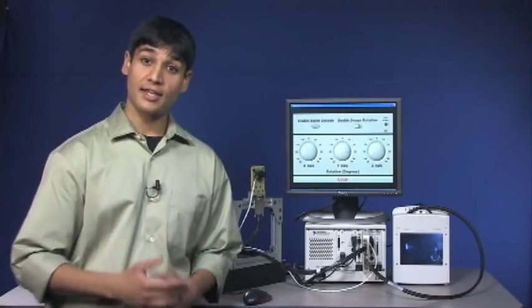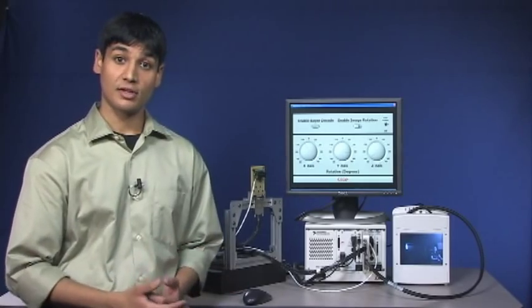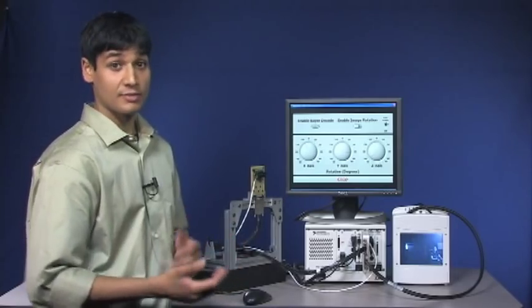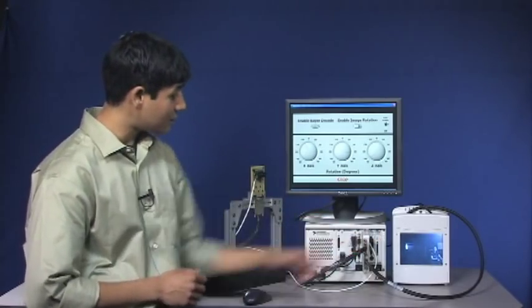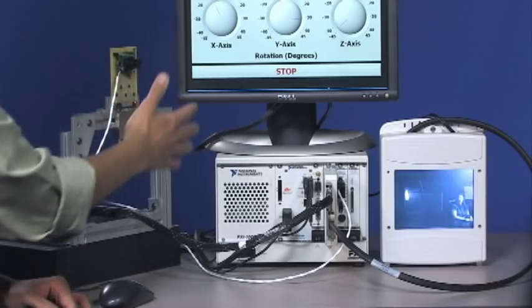In LabVIEW FPGA, we're taking data from this image sensor and then storing it into a frame buffer on the onboard memory. We have a separate LabVIEW FPGA loop, then taking data out of that buffer, and then displaying it on the LCD display. I can move my hand here, and you can watch it now live on the display.